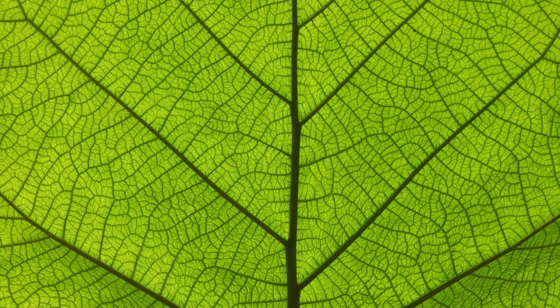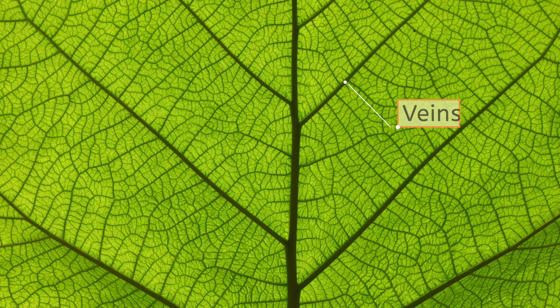If you've ever looked at a leaf carefully, you may have noticed thin lines within the leaf called veins. These lines are part of the plant's vascular system, which delivers nutrients and water to keep the leaf healthy.